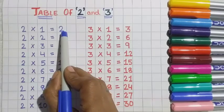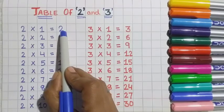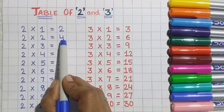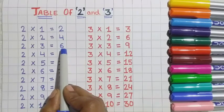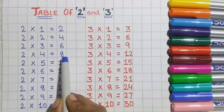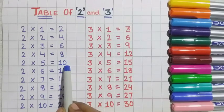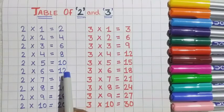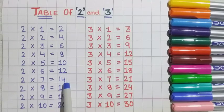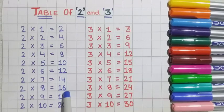2 ones are two. 2 twos are four. 2 threes are six. 2 fours are eight. 2 fives are ten. 2 sixes are twelve. 2 sevens are fourteen. 2 eights are sixteen. 2 nines are eighteen. 2 tens are twenty.